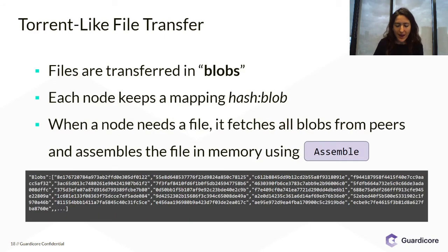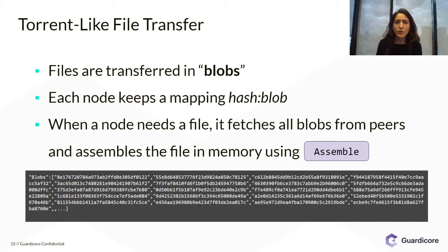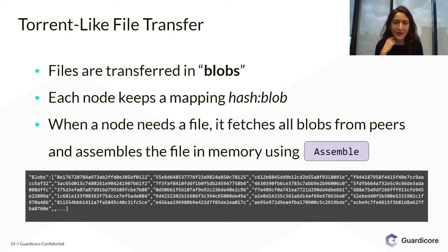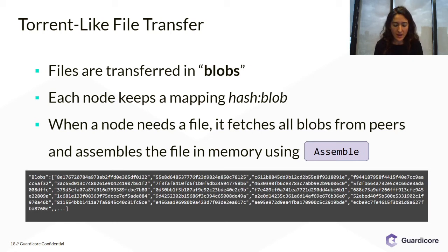Another interesting aspect of the FritzFrog network is the way it transfers files between nodes. It uses a torrent-like file transfer mechanism where files are never transferred in their entirety — they are transferred in blobs. Blobs are pieces of binary data which comprise a binary file as a whole.